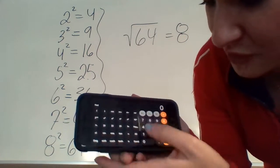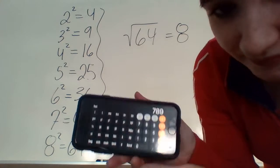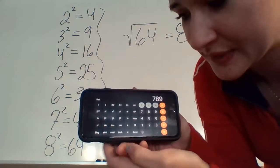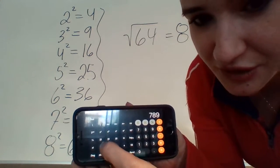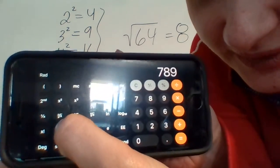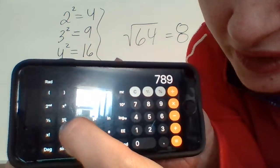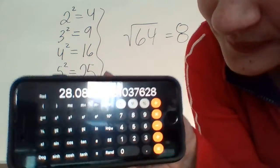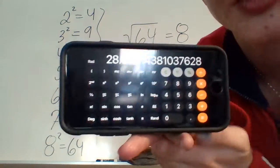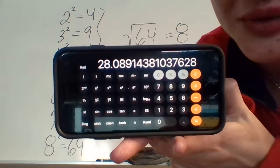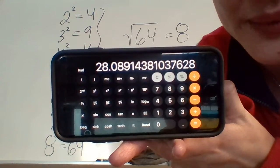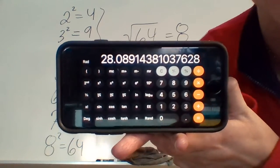Take a random number, whatever number you want to do. I'm gonna do 789. We're gonna take the square root of 789, and then you go over to, can you see it? It is a square root symbol, square root of x. Click on that. So apparently the square root of 789 is 28.08914381037628.